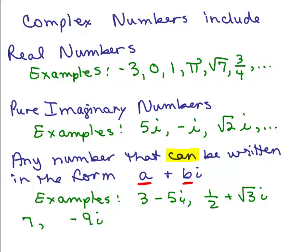So, something like 3 minus 5i, one half plus square root of 3 times i, 7, negative 9i are all complex numbers. You might say 7 isn't written as a plus bi, but you could write it as 7 plus 0i. And negative 9i could be written as 0 minus 9i. So, a complex number written as a plus bi is in standard form, where a is the real part and b is the imaginary part.